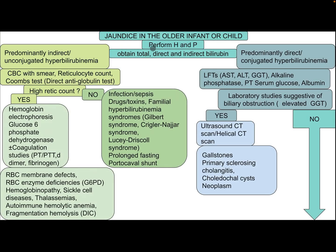How to approach the child with jaundice: after performing history and physical examination, obtain total, direct, and indirect bilirubin. If it is predominantly indirect (unconjugated hyperbilirubinemia), consider CBC with smear, reticulocyte count, and Coombs test (direct anti-globulin test). If the reticulocyte count is high, send the patient for hemoglobin electrophoresis, glucose-6-phosphate dehydrogenase (G6PD) assay, and coagulation studies (PT, PTT, D-dimer, fibrinogen). Differential diagnosis may include RBC membrane defects, RBC enzyme deficiency (G6PD), hemoglobinopathy (sickle disease, thalassemia), autoimmune hemolytic anemia, fragmentation hemolysis, and DIC.